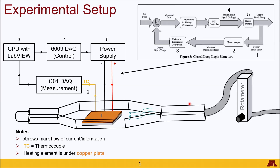Meanwhile, we have a rotometer connected with a supply line, and you can adjust the flow rate, which will send air through the flow channel, passing over the copper plate and cooling it down before exiting. Some quick notes about this setup: the arrows indicate the direction of information flow or current, TC represents the thermocouple, and the heating element is underneath the copper plate.